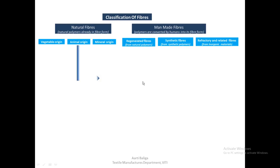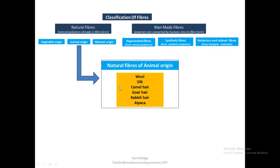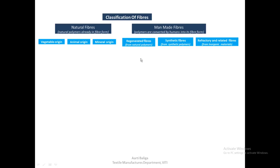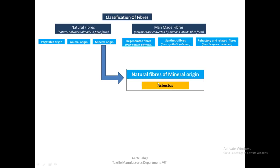Natural fibers of animal origin include wool, silk, camel hair, goat hair, rabbit hair, and alpaca hair. For the mineral origin classification, there is only one example, which is asbestos.